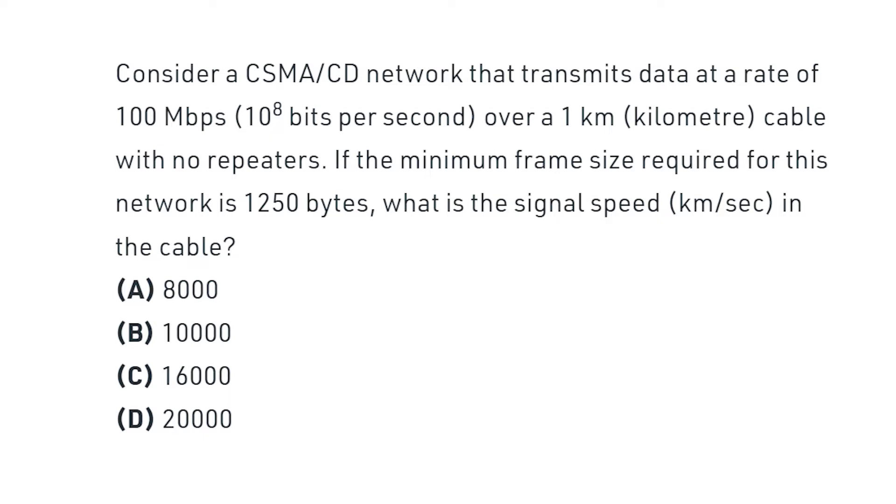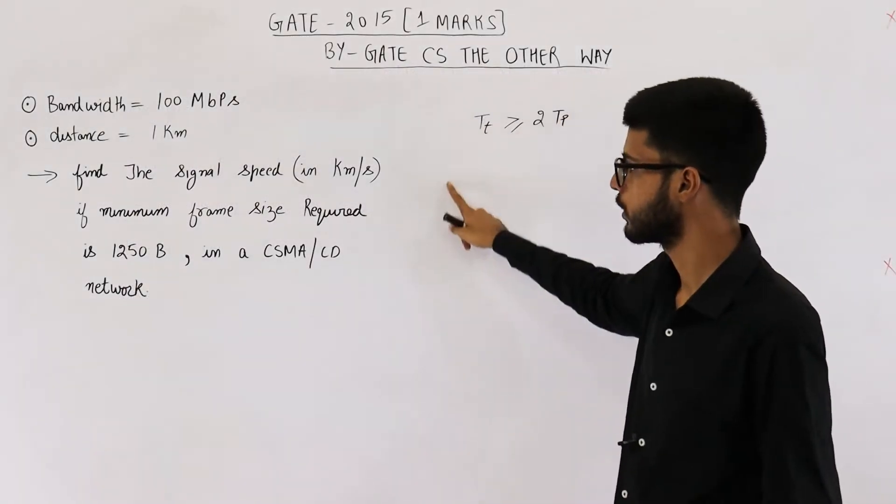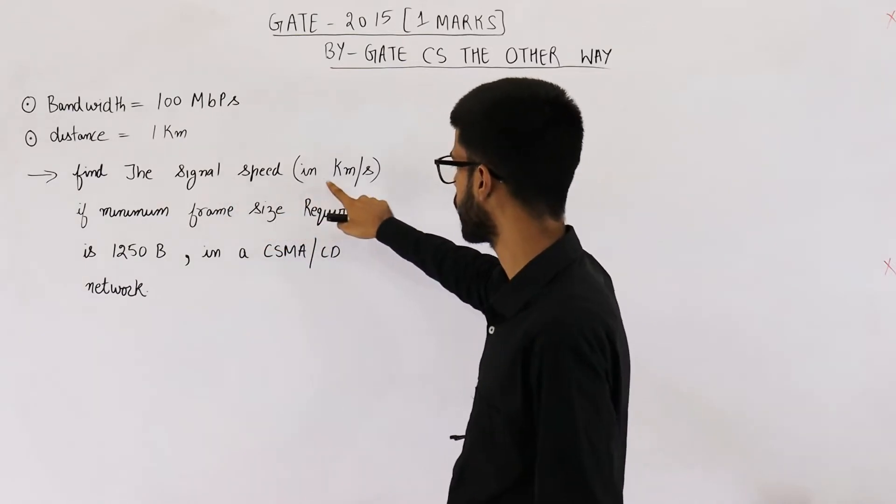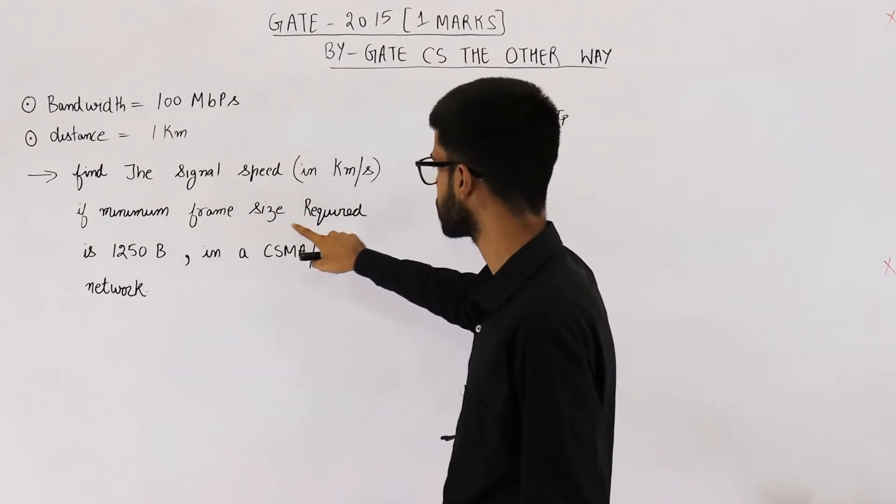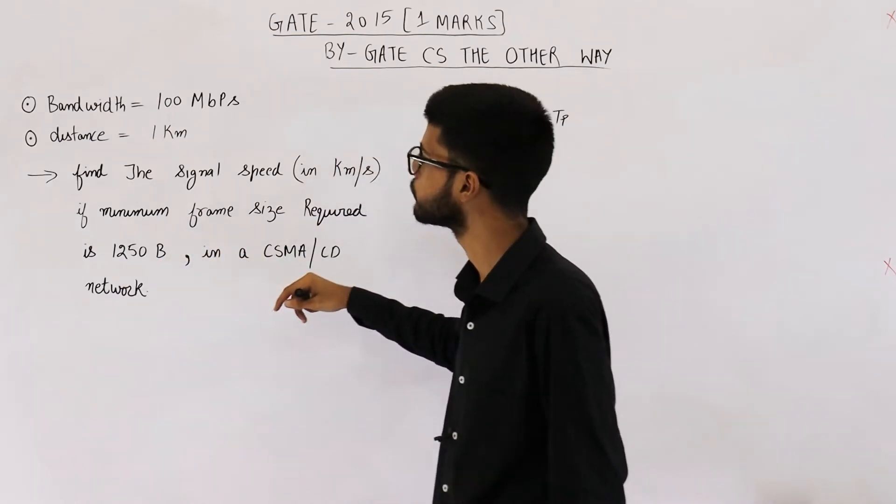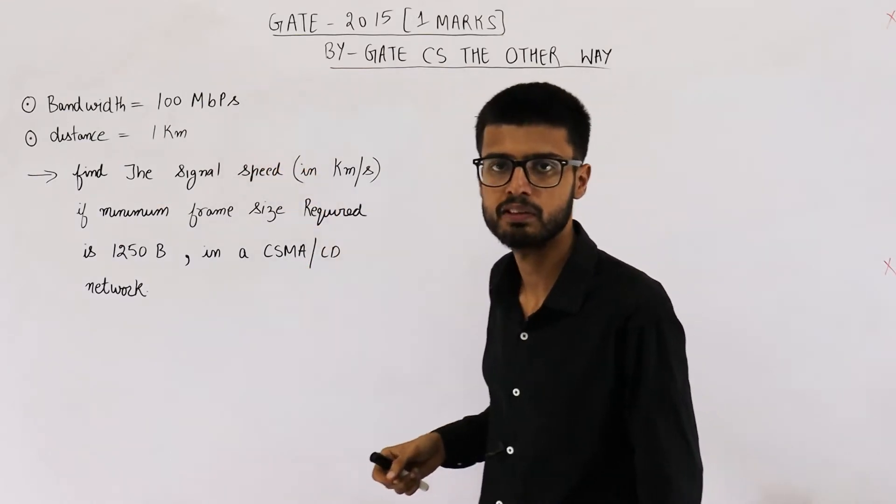You can have a look at the statement if you want to. All the important information given in the question is noted down here. They are asking: find the signal speed in kilometers per second if minimum frame size required is 1250 bytes. Bandwidth and distance between the nodes is also given in the question.